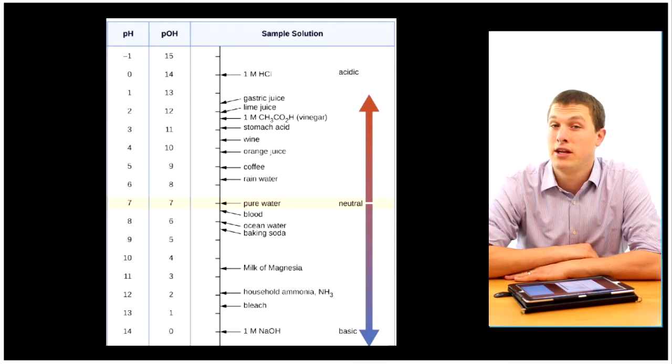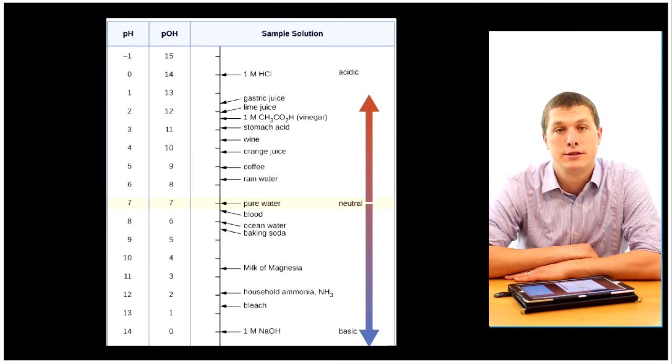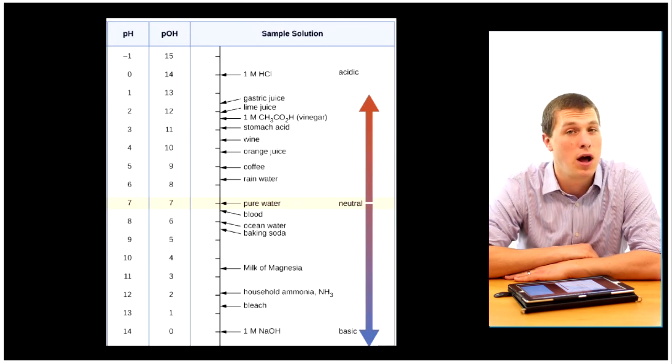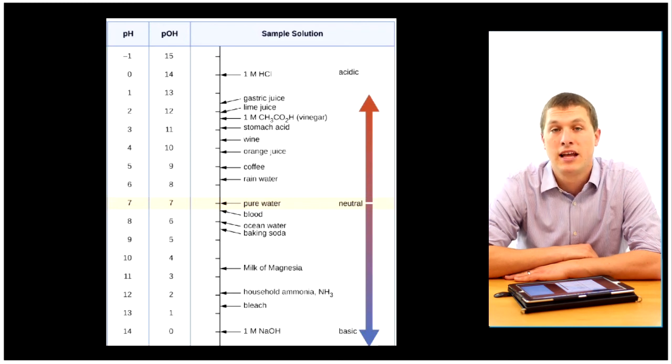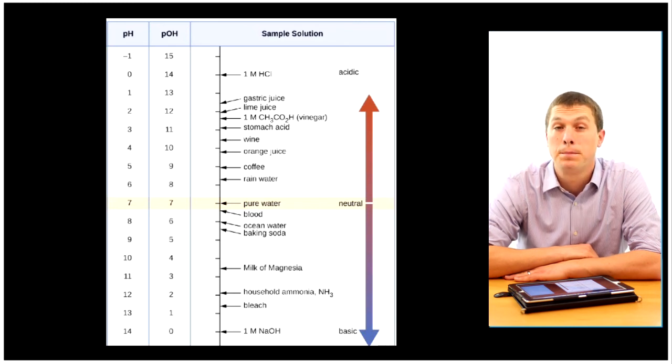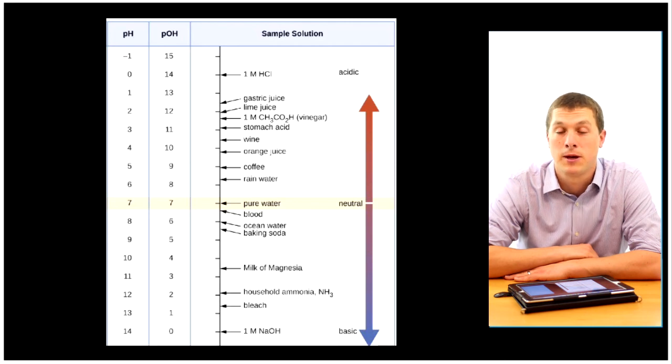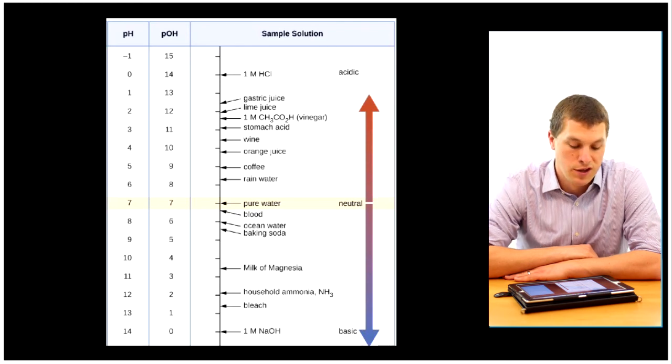Today on the show, we're going to be calculating the pH of strong acids and strong bases. I emphasize strong because these steps are only going to work if you have a strong acid or base. And that's because strong acids or bases completely dissociate, and that simplifies the math a bit. If you have a weak acid or base problem, check out the link below to a video where I calculate the pH of a weak acid or base.